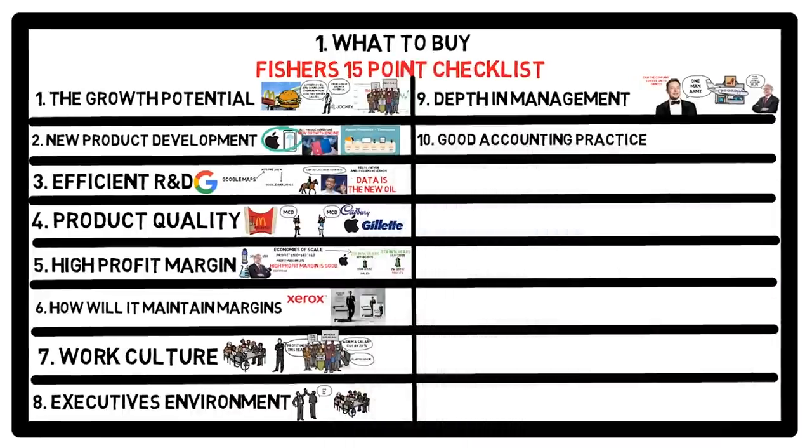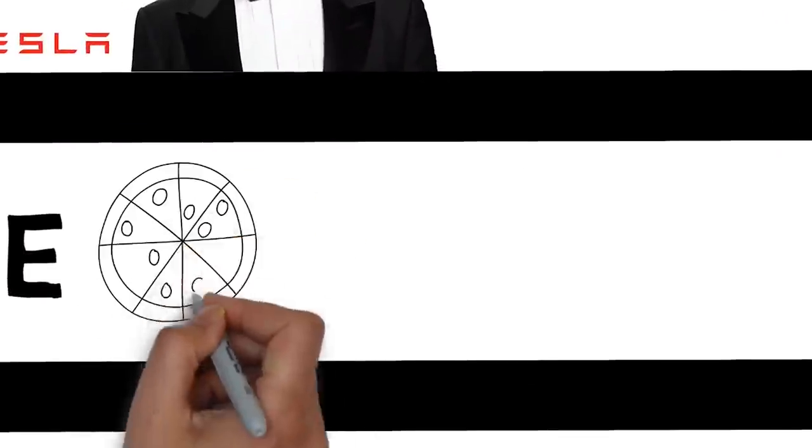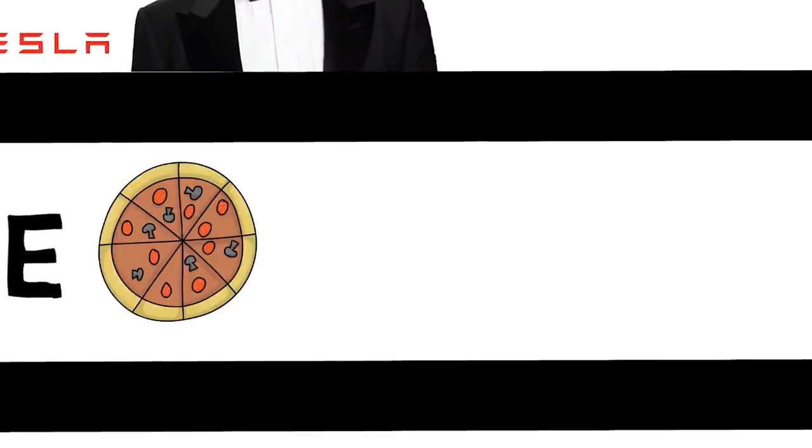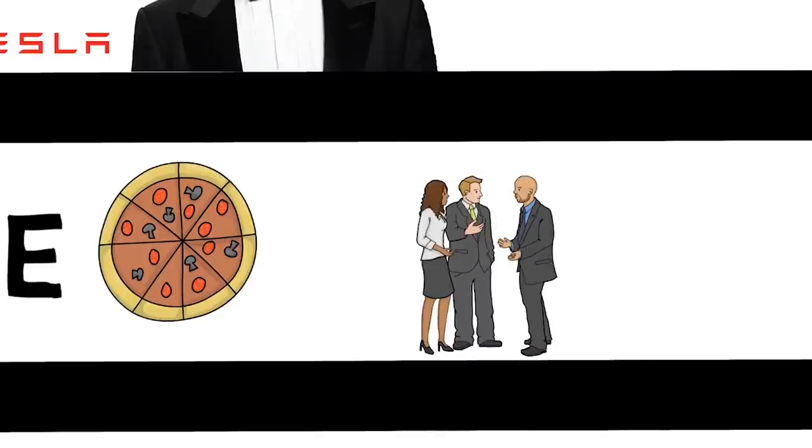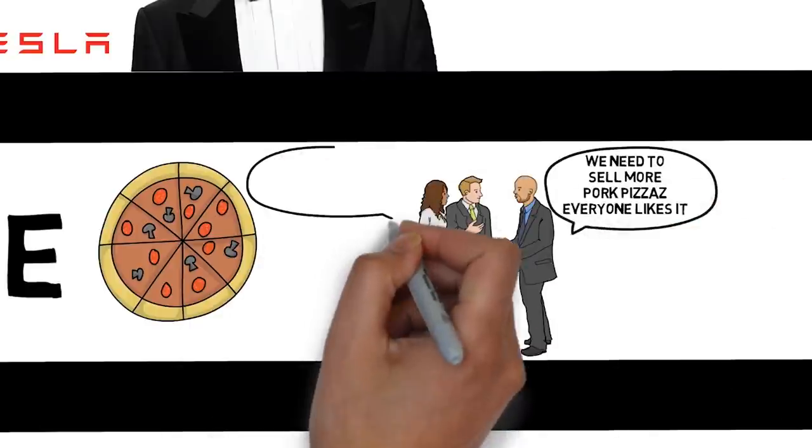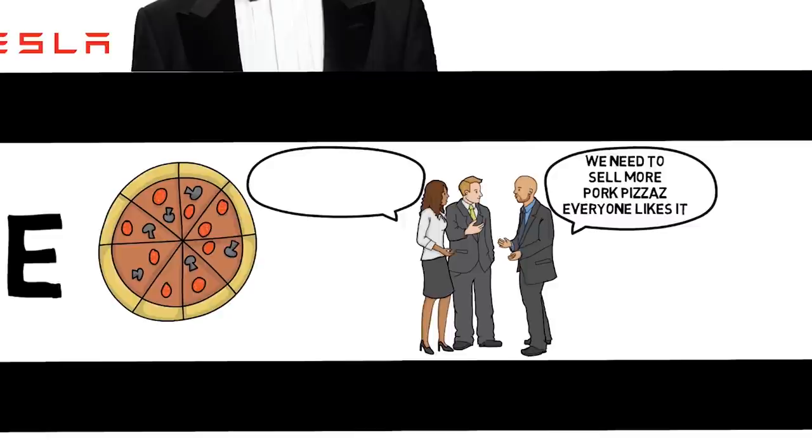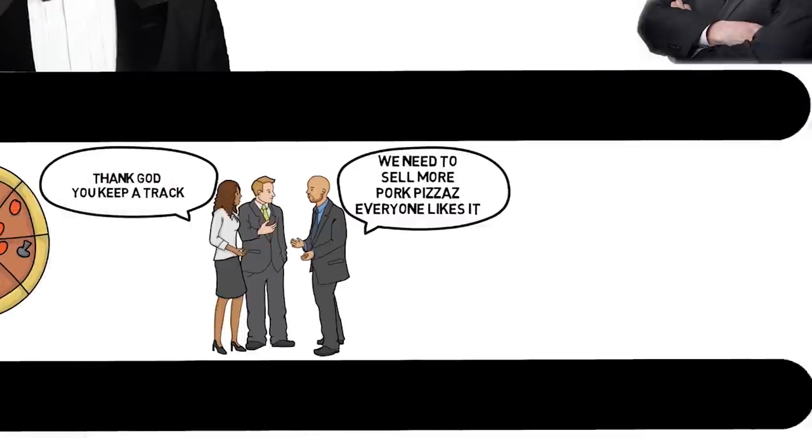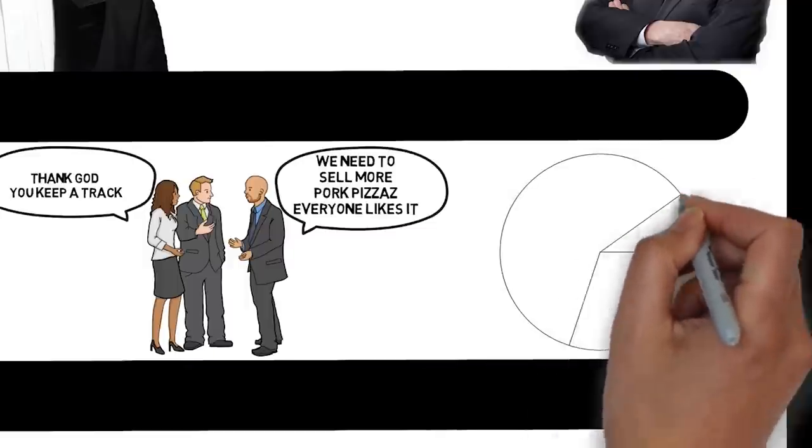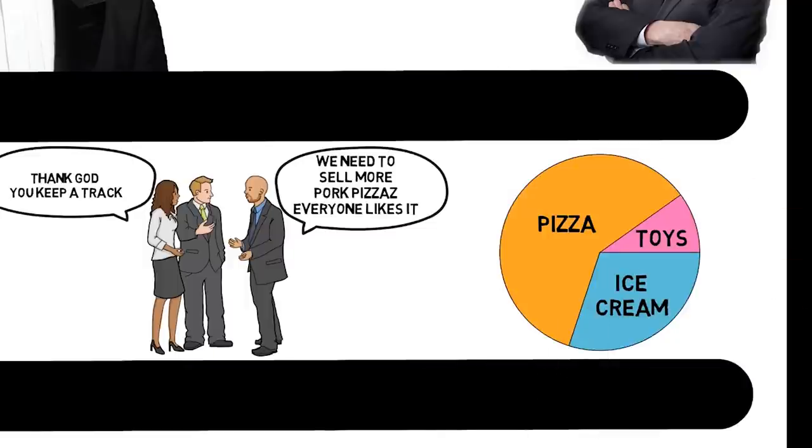Tenth, does the company have good accounting? If there is a pizza company and if it does not know which pizza gives them the highest revenue and which the lowest, then like a foolish person, company would be investing their money on their worst-selling pizza making no good use of the money. Thus, it is prudent for a company to know what section of their business produces how much income. Only then can they analyze and improve the business.